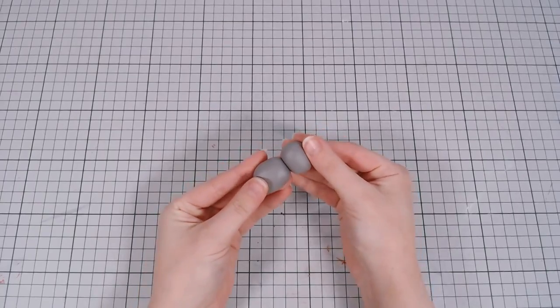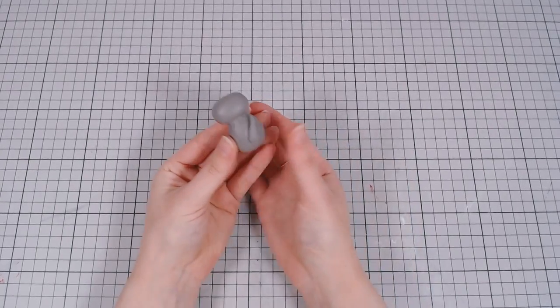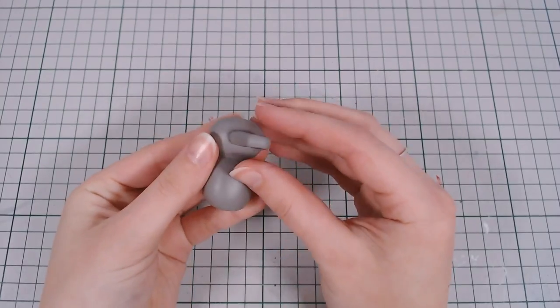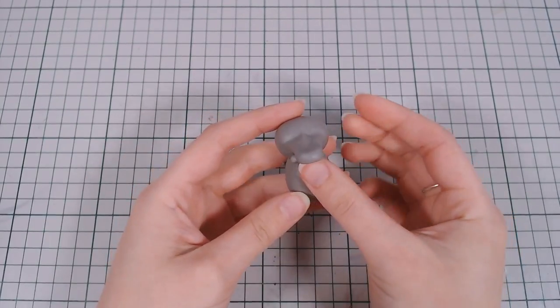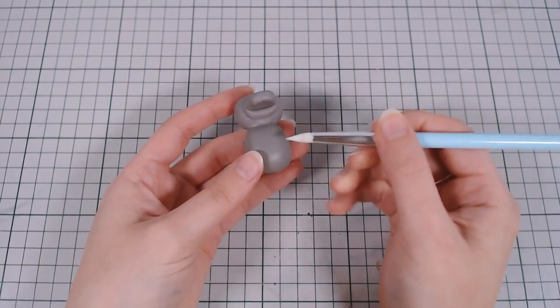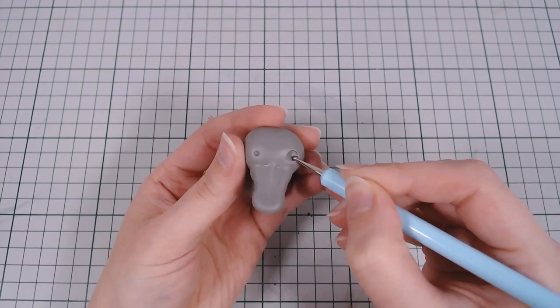Now for the bath occupants, I'm making Psyduck from Pokemon. The design is pretty simple, just two parts squished together with the tail, beak and arms. I made four of these ducks and, as always, when making the same thing multiple times, one is bound to be uglier than the rest.